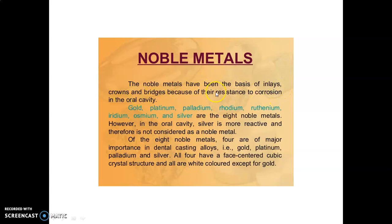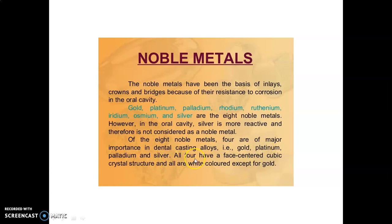Noble metals have been the bases of inlays, crowns, and bridges because of their resistance to corrosion in the oral cavity. There are eight noble metals: gold, platinum, palladium, rhodium, ruthenium, iridium, osmium, and silver. However, in the oral cavity, silver is more reactive and therefore is not considered a noble metal. Of the eight, four are of major importance in dental casting alloys — gold, platinum, palladium, and silver — because they have an FCC (face-centered cubic) crystal structure, and all are white except gold.